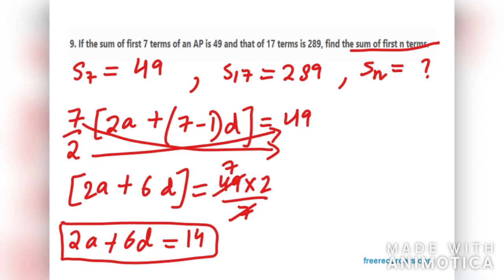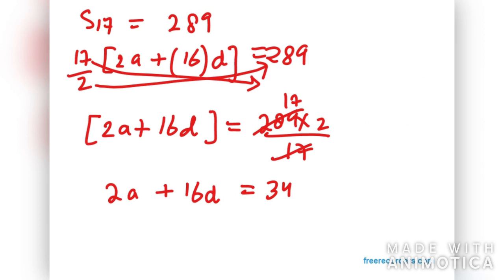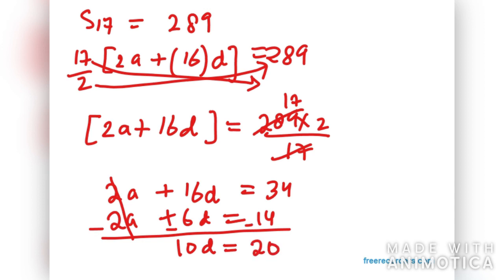The first equation is 2A plus 6D equals 14. The second is 2A plus 16D equals 34. Now let's eliminate A from these equations. The A values cancel out. 16D minus 6D is 10D, and 34 minus 14 is 20. So D in this case is 20 over 10 which equals 2. That means D is 2.